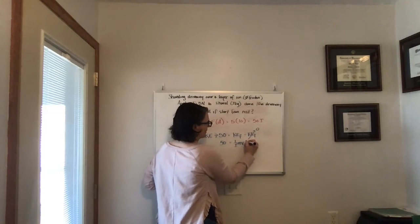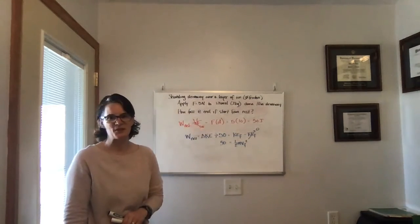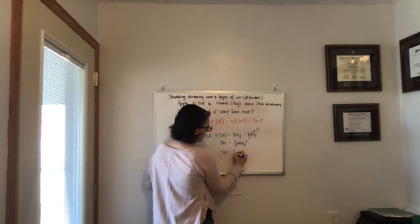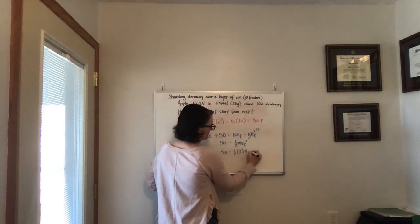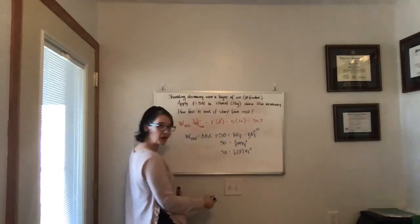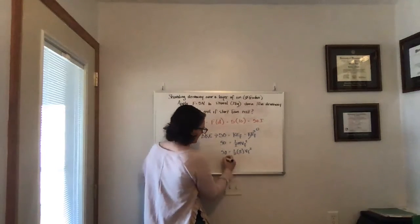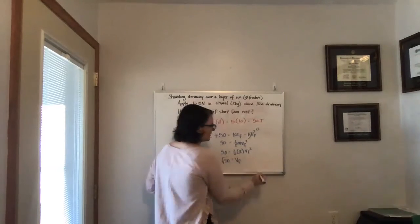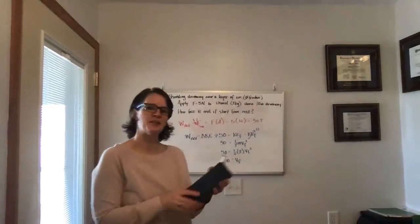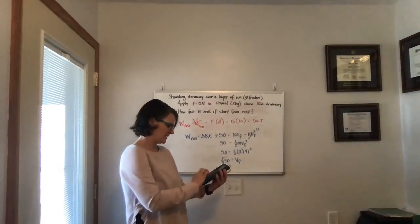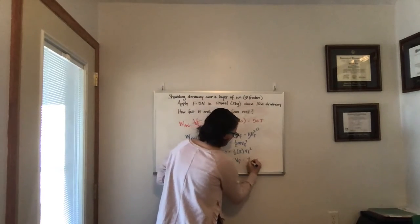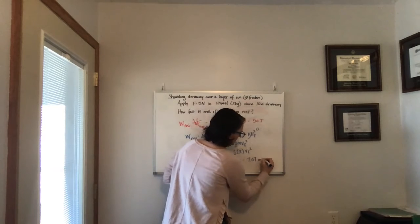Since we want to know that final speed, we can determine that value. So we have 50 is equal to one-half the mass, which is two, times the final velocity squared. Those two cancel each other out. One-half of two is one. And we get the square root of 50 is equal to the final velocity. And as much as I probably should have an estimate of that in my head, I don't. So I will pull out my handy-dandy calculator. The square root of 50 is 7.07 meters per second.